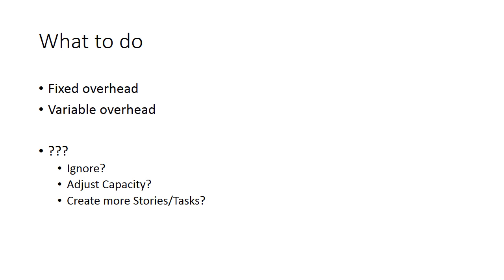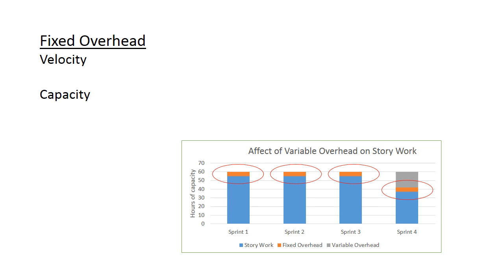The variable overhead decreases your capacity for work for one sprint, whereas the fixed overhead in orange allows for consistent team performance. The important question is: how do we handle fixed overhead and variable overhead? The fixed overhead items, such as backlog grooming, sprint planning, demos, and retrospectives, have a consistent effect on your capacity, and therefore they have no effect on your velocity. So I recommend you ignore these items with respect to velocity.